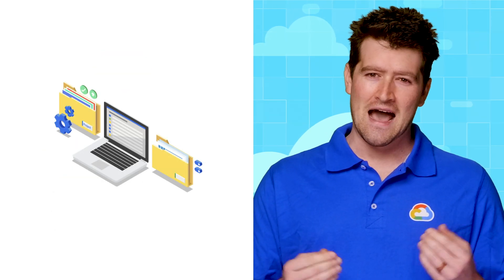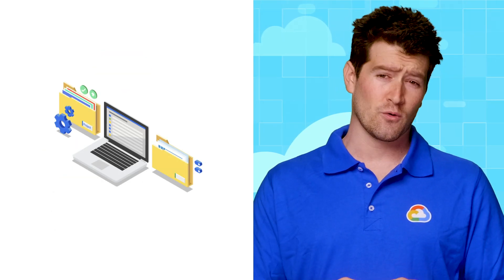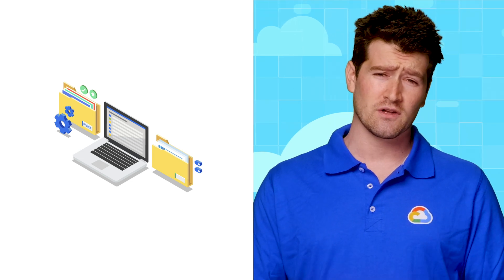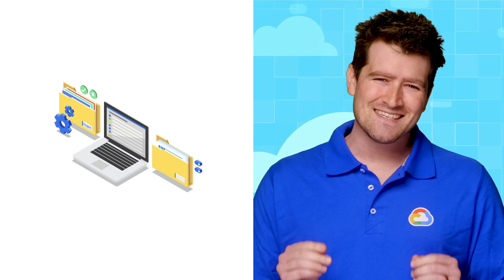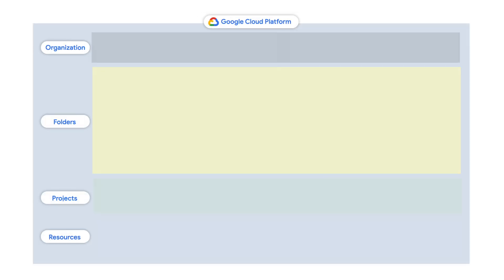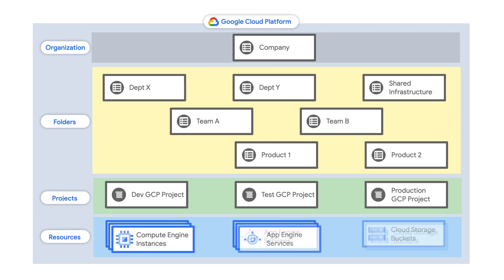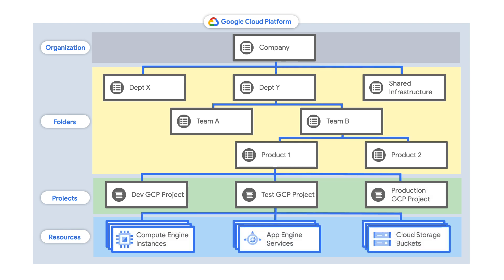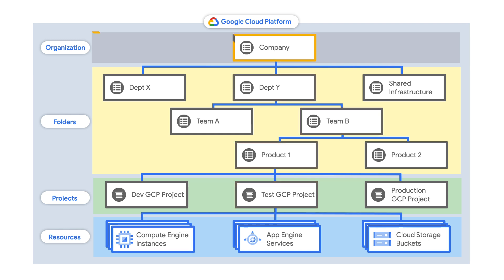Let's start with the first question: how do you model your existing business and organizational structures in Google Cloud? You'll want to map your existing lines of reporting and communication to your resource hierarchy. The resource hierarchy provides structure to your cloud environment, determines the way you are built, and establishes a security model for granting roles and permissions. It's like the skeleton for all your cloud resources. For example, a Compute Engine VM is a resource which falls within a project and folder, and all of these are contained within an organization.